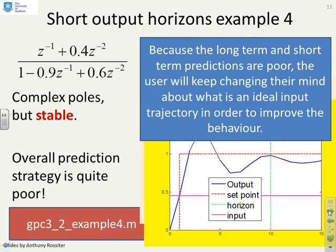And so what we've got again is because the long term and the short term predictions are poor, the user's going to keep changing their mind about what an ideal input should be in order to improve the behavior. And so the optimization is simply not a good optimization or it's ill-posed.